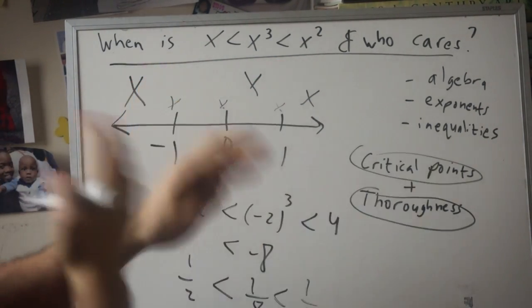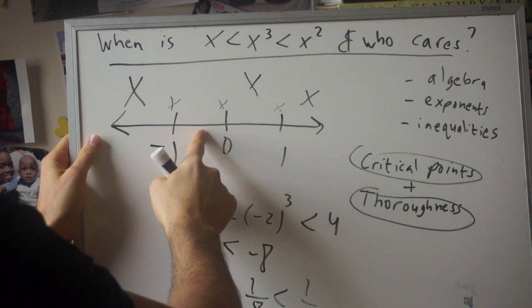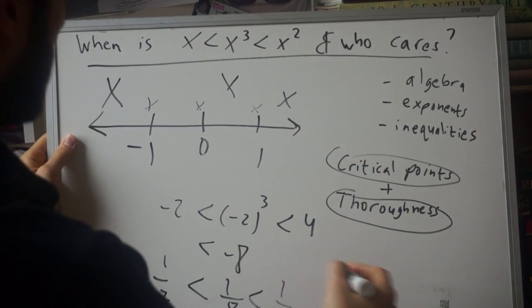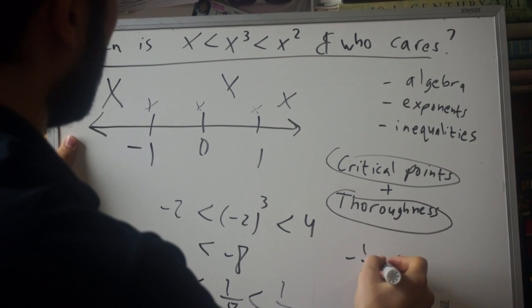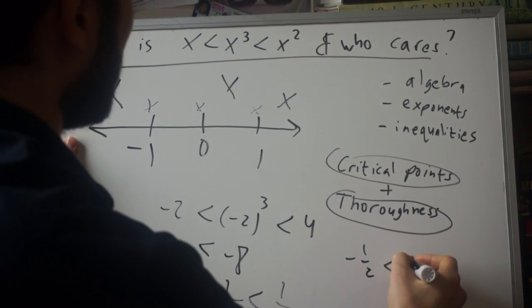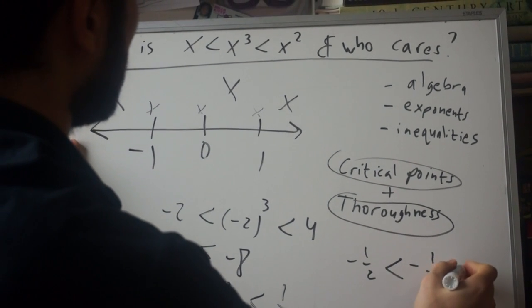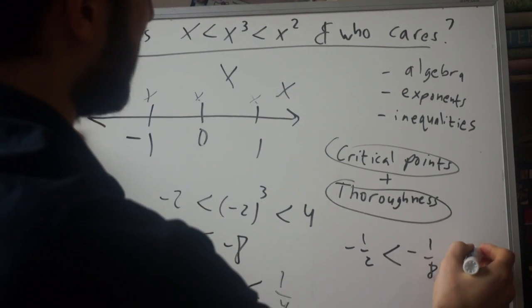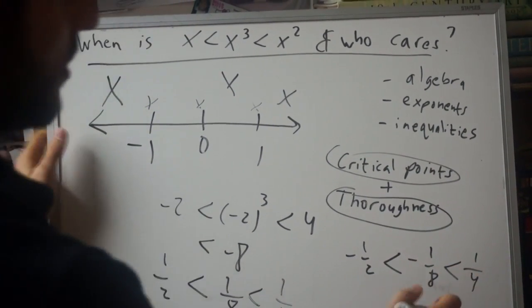All right, so far our final interval—if this doesn't work, then nothing works. So let's try negative a half. Is negative a half less than negative one eighth, less than negative one half squared, which is one fourth? So that's true, and negative one eighth is closer to zero, so actually that's true as well. So bingo, we found it!